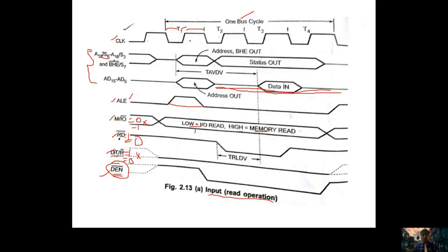For a read operation: RD̅ is low from T2 to T4; M/IO̅ is one for memory, zero for I/O, from T2 to T4; before T2 it is tri-state. DT/R̅ is also tri-state before T2. ALE is high during T1 only and low from T2 to T4. Multiplexed lines act as multiplexed up to T1, then become pure address lines and pure status lines after T1, and pure data lines from T2 to T4.